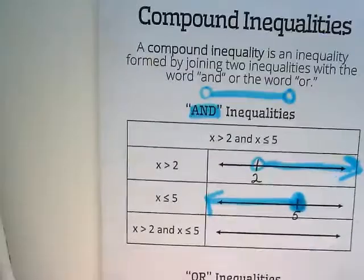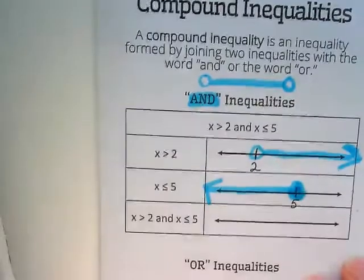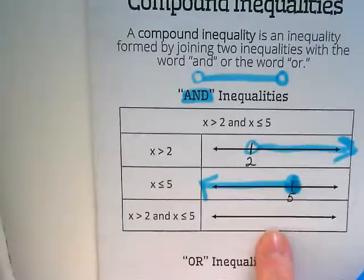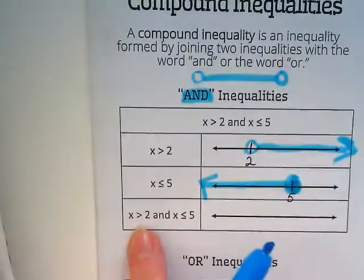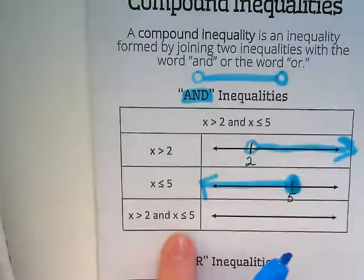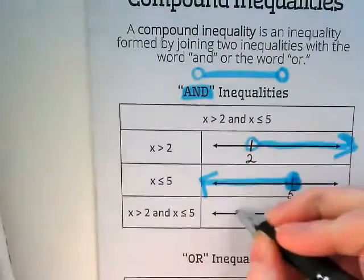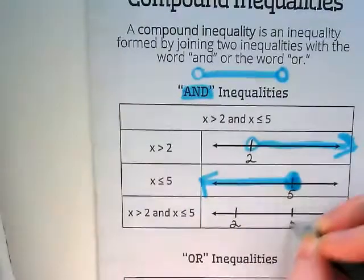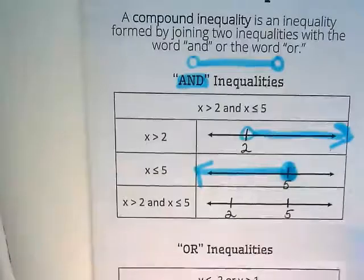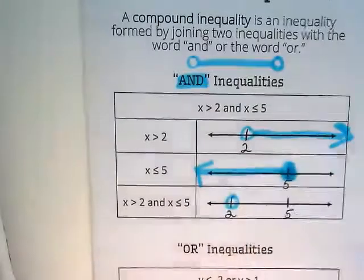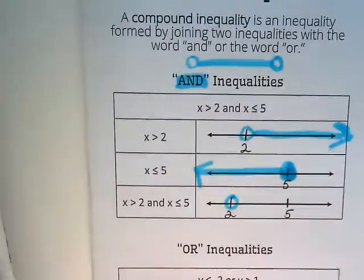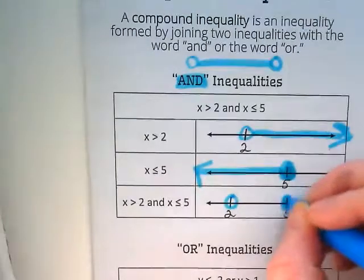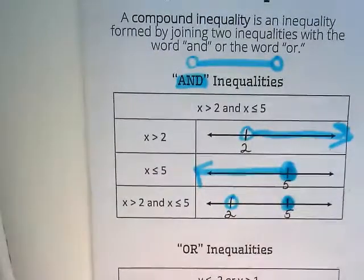So when we graph those two together as compound inequality, that's what this one is, where we're combining x is greater than 2 and x is less than or equal to 5. So this one down here is our compound inequality, where we have 2 and we have 5. The 2 has an open circle. The 5 has a closed circle. And the line only goes between them.